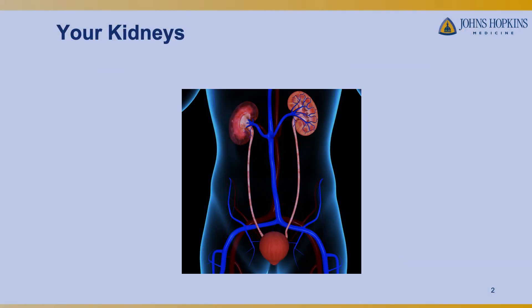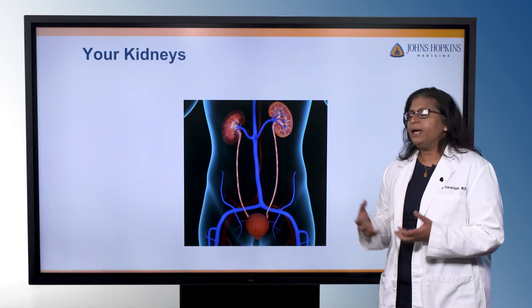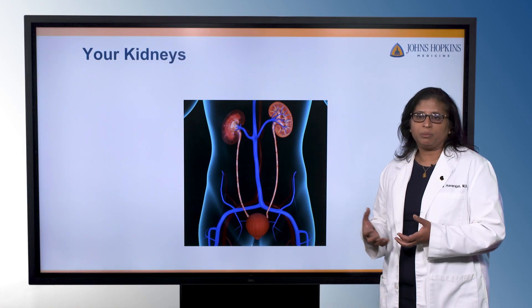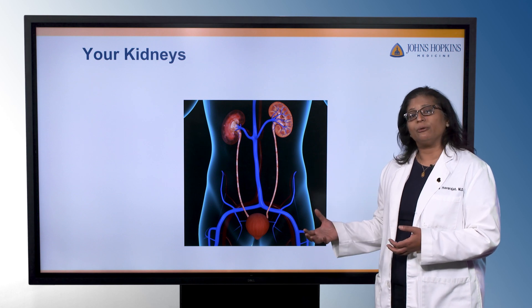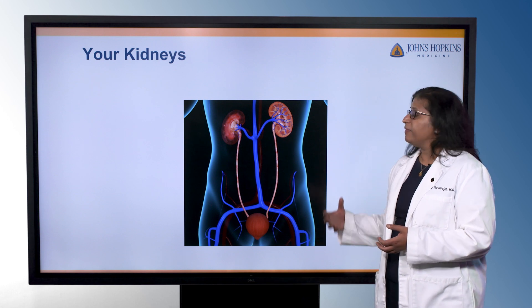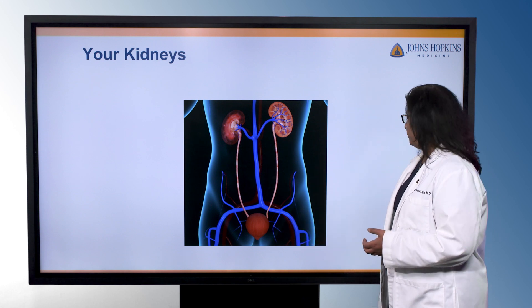Starting with your kidneys — they're about the size of your fist. They sit in the mid portion of your back and they're under several layers of muscle. They filter the blood several hundred times a day and generate urine that later gets collected in the bladder.